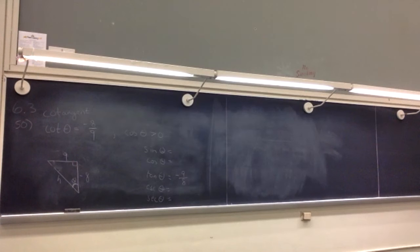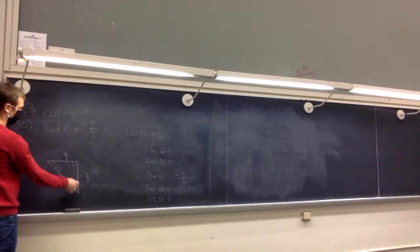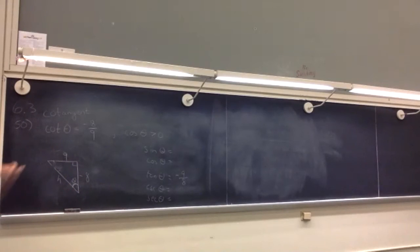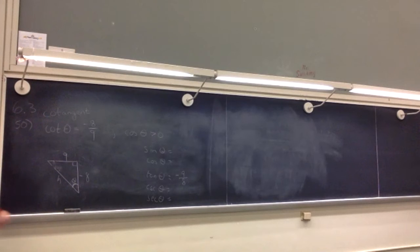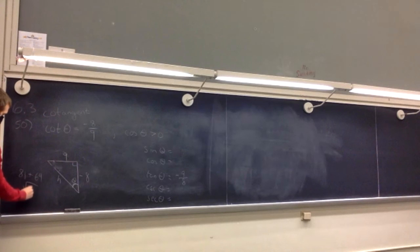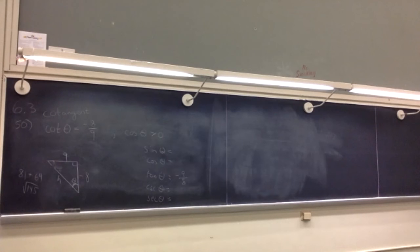We've got this right triangle. Tangent is opposite over adjacent = −9/8. Now we need the hypotenuse using the Pythagorean theorem: 9² + (−8)² = 81 + 64 = 145. The hypotenuse is √145. That's not a perfect square — 144 is 12², so √145 is irrational.